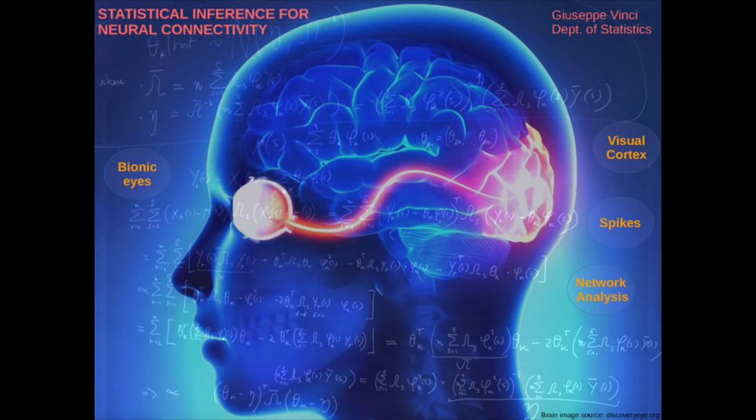Understanding neural connectivity can be extremely useful to improve human life. In my thesis, I'm focusing on the visual cortex — the part of the brain that processes all the images you can see. Understanding the neural connectivity in the visual cortex can be extremely useful for engineers to develop new bionic eyes. A bionic eye is a visual prosthesis device that can send artificial electrical signals to the visual cortex to help blind people see, even those blind since birth.